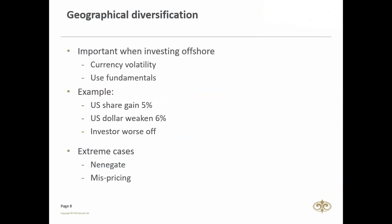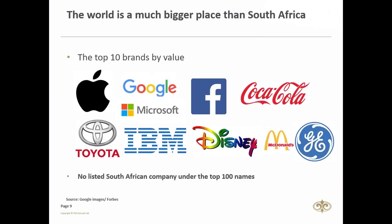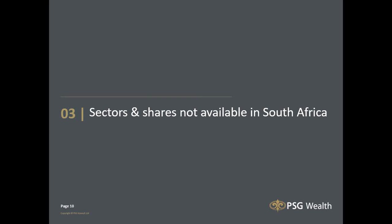In extreme cases, investors may want to take advantage of mispricing to take money offshore and be ready for an investment. The world is a much bigger place than South Africa. On this slide I've listed the top 10 brands by value compiled by Forbes in 2016: Apple, Google, Microsoft, Facebook, Coca-Cola, Toyota, IBM, Disney, McDonald's, and General Electric. Not a single South African company made this top 100 list.